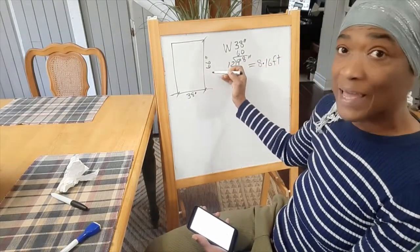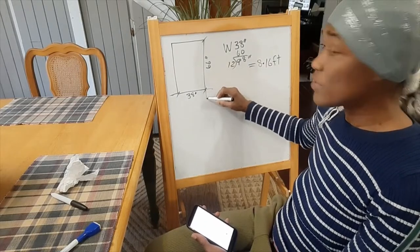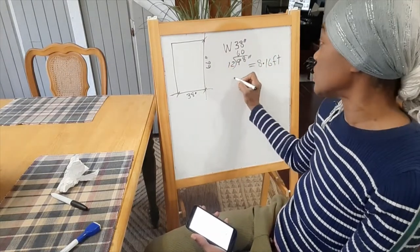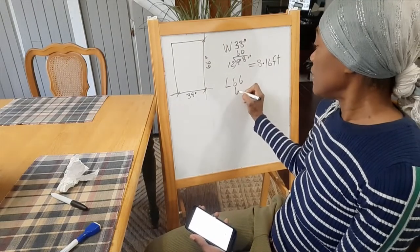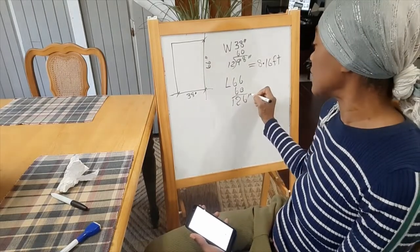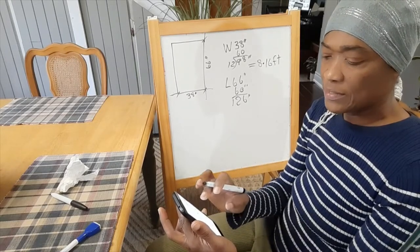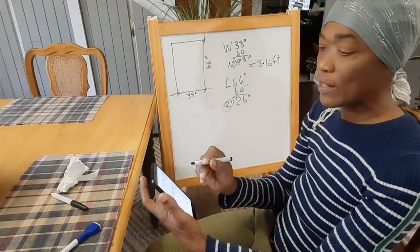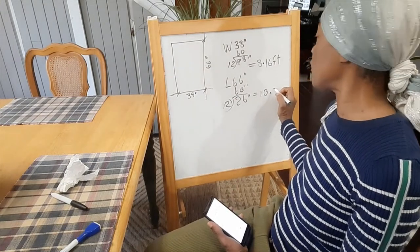Now, let's do the length. We'll need to add 30 inches for this side here and 30 inches for that side. So we'll need to add 60 inches to 66. So that's our length, 60 inches. That's 126 inches. So it's 126 divided by 12. So we divide this by 12. And that gives us 10.5 feet.